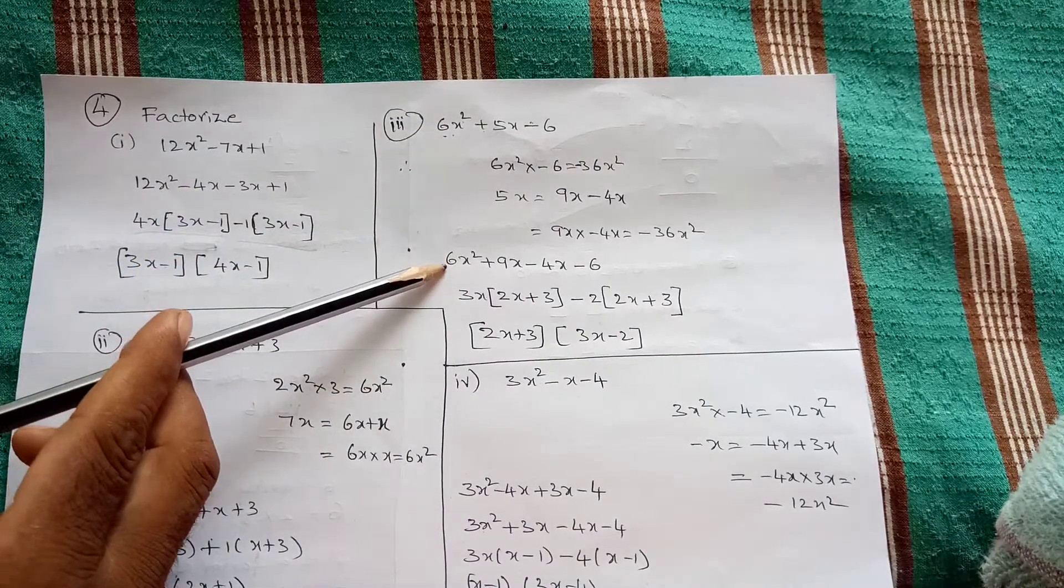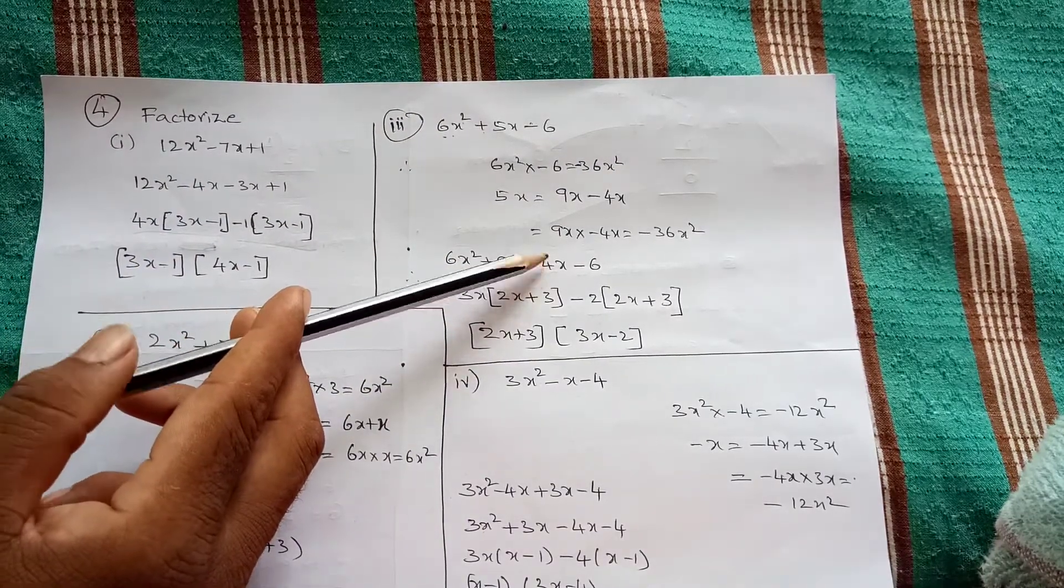Write down, take this one: 6x square plus 9x minus 4x minus 6.